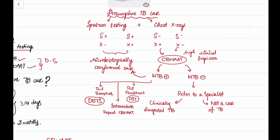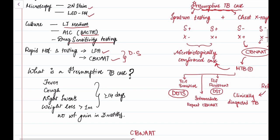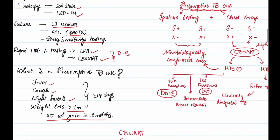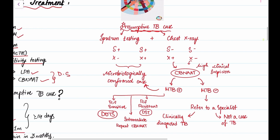When we have a presumptive TB case, first let us know what is a presumptive TB case. It's a patient who has had fever, cough, night sweats for 14 days or more, weight loss for more than one month, and no weight gain since three months. This patient is called a presumptive TB case, and is sent for sputum testing and chest x-ray.